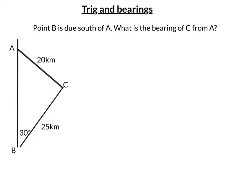So what it wants us to work out is this bearing here of C from A. What else do we know? Well, we know that B is due south from A, so this angle is 180 degrees. So if we can work out this angle, we can take it away from 180 to use that to work out our bearing.